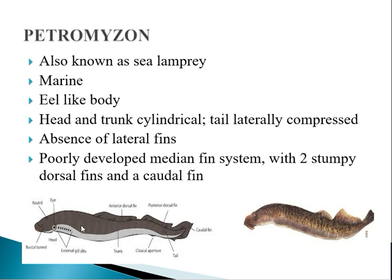It has an eel-like body which is cylindrical with a distinct head, trunk and tail. The head and trunk are cylindrical whereas the tail is laterally compressed, meaning side-to-side flattening. The fin system includes an anterior dorsal fin, a posterior dorsal fin and a caudal fin, so it possesses a median fin system.